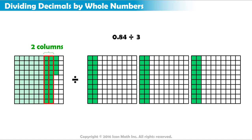We cannot put these 2 remaining columns into the groups, because we have 3 groups but only 2 columns. So instead, we must view them as individual squares or hundreds. We have 2 columns or 20 squares plus 4 squares. We have a total of 24 squares.